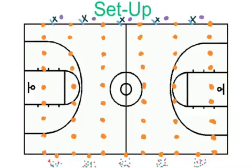To set this game up you will start by creating lanes with cones, which are represented by the orange dots here. You want to make your lanes run from sideline to sideline of the gym. Then in the center of each lane you also want to place another cone, which are also represented by the orange dots in this picture at the bottom of the screen.